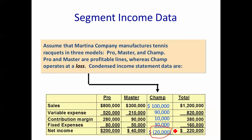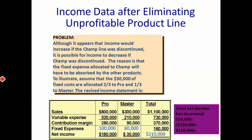When we do all that, Champ is unprofitable. Total profit is $220,000, but that's carrying Champ at a $20,000 loss. So it looks like if I got rid of Champ, I wouldn't have this loss and my profit should go up by $20,000 to $240,000. Well, though it appears that way, the fixed costs allocated to Champ will be absorbed by the other products.